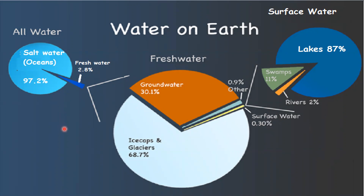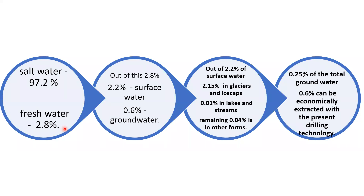Is it not very precious to conserve water? Salt water is 97.2% and fresh water 2.8%. Of this 2.8%, surface water is 2.2% and groundwater 0.6%. Of the 2.2% surface water, 2.15% is in glaciers and ice caps, 0.01% in lakes and streams, and 0.04% in other forms. Only 0.6% of total groundwater can be economically extracted with present drilling technology, and this water has to meet the needs of a huge growing population.